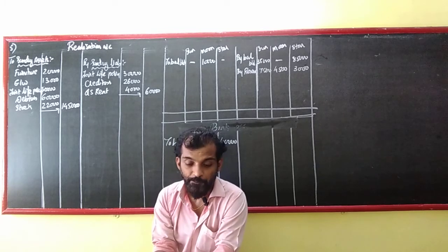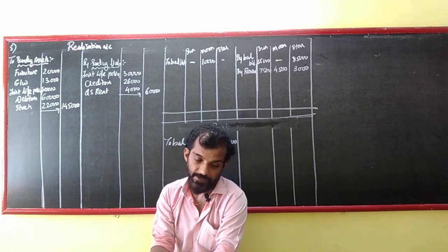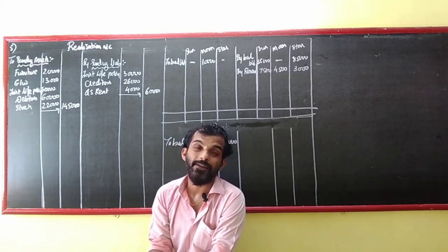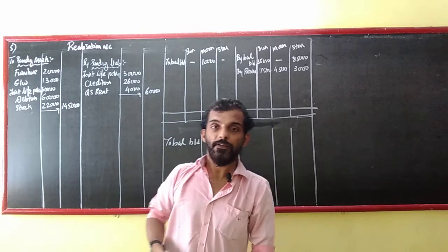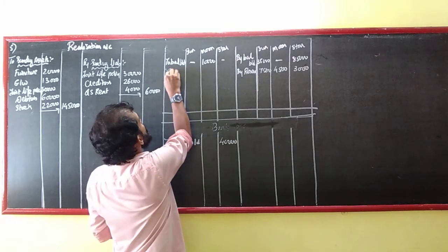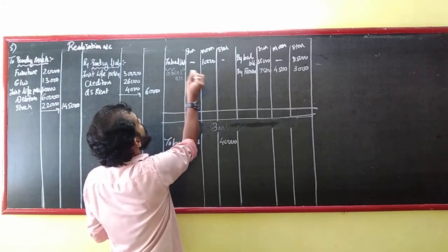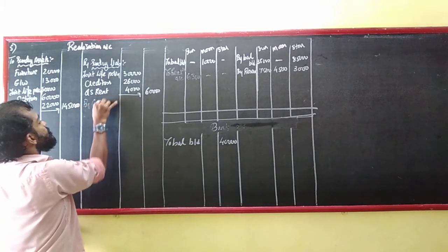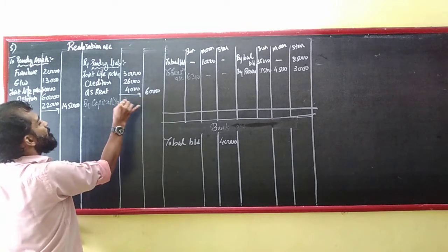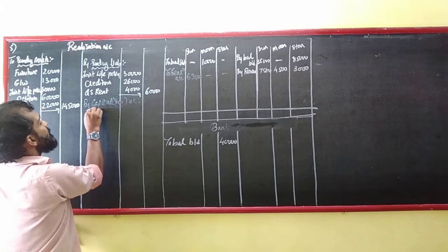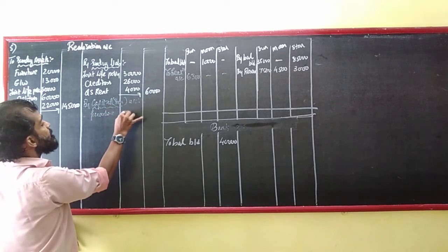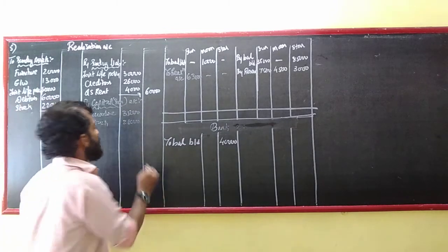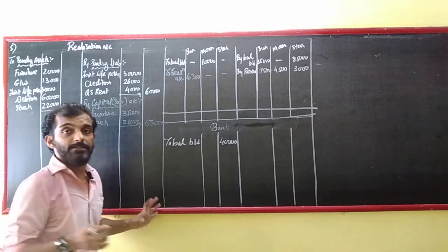Adjustments. Following are the cash and non-cash transactions. First: Furniture and stock were taken over by Sun at agreed values of 35 and 28 respectively. So 35 plus 28 equals 63. Sun is the receiver, so Sun account debit to realization account. Son's capital account will be debited. What he is taking: Furniture for 35,000 and stock for 28,000, total 63,000. I hope the first adjustment is clear.